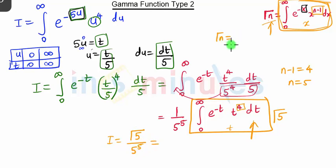What is gamma of n? Gamma of n is n minus 1 factorial, provided n is greater than 0 and n is an integer.